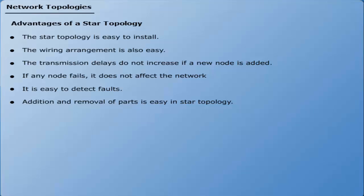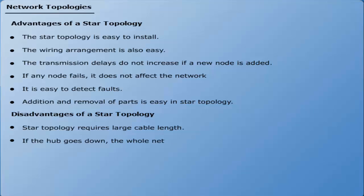Disadvantages of a star topology. Number 1: Star topology requires large cable length. Number 2: If the hub goes down, the whole network will be blocked. Ring topology.